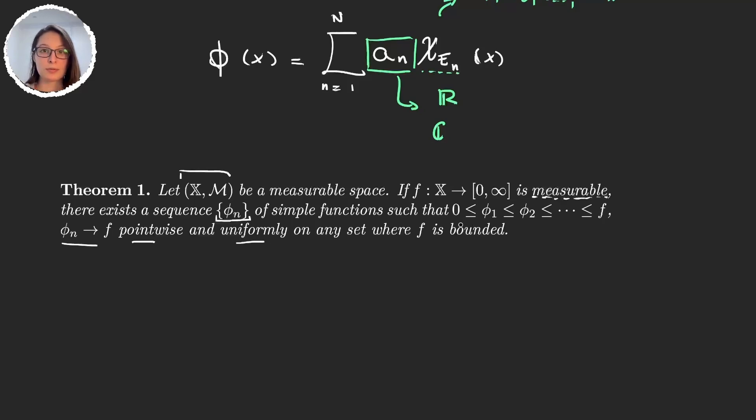That converge to f pointwise and uniformly on a set where f is bounded. So why is this theorem useful? Well, we know for example that continuous functions are measurable. So what this theorem tells us is any continuous function can be approximated pointwise or uniformly on a set where a function is bounded by simple functions, and that is huge.